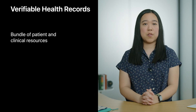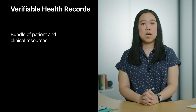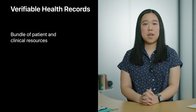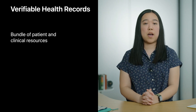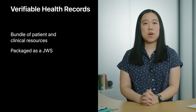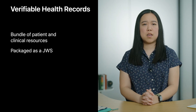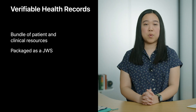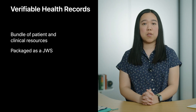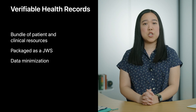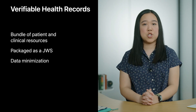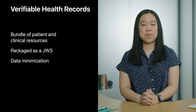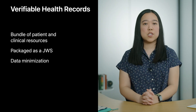A verifiable health record contains multiple FHIR resources, including a patient resource and one or more clinical resources. These resources are bundled in what we call a smart health card. Issuers, or institutions that create verifiable health records such as a lab or health care provider, cryptographically sign this smart health card as a JSON Web Signature, or JWS. Finally, issuers generate verifiable health records such that they include only necessary information about the patient and their clinical data.